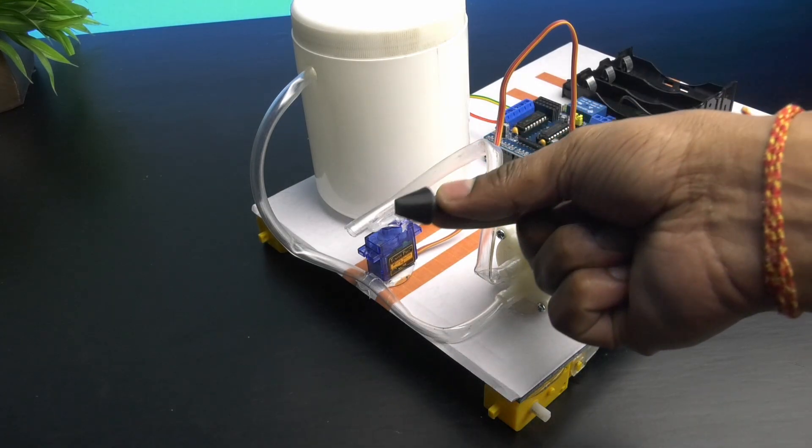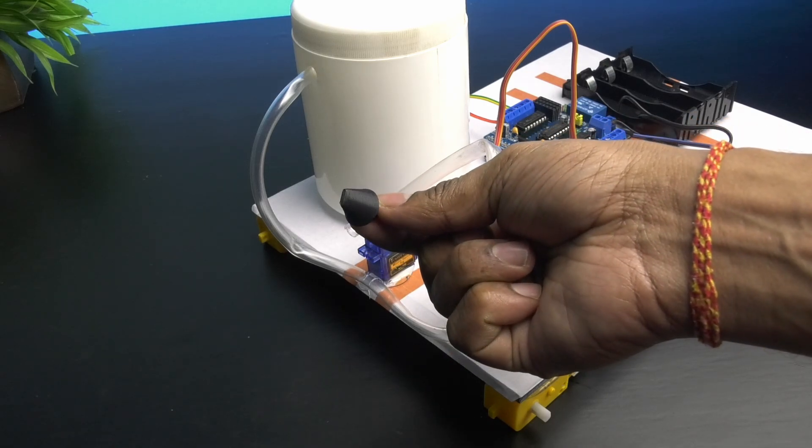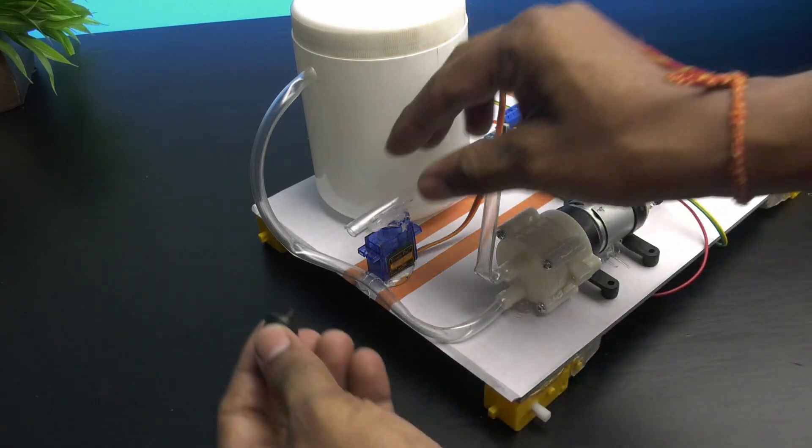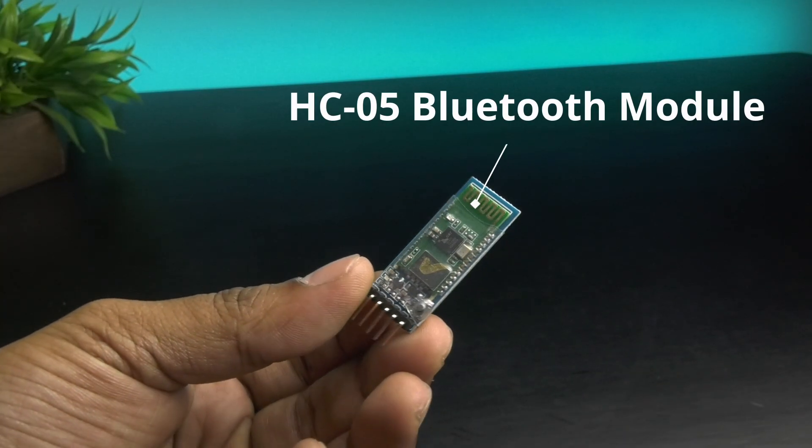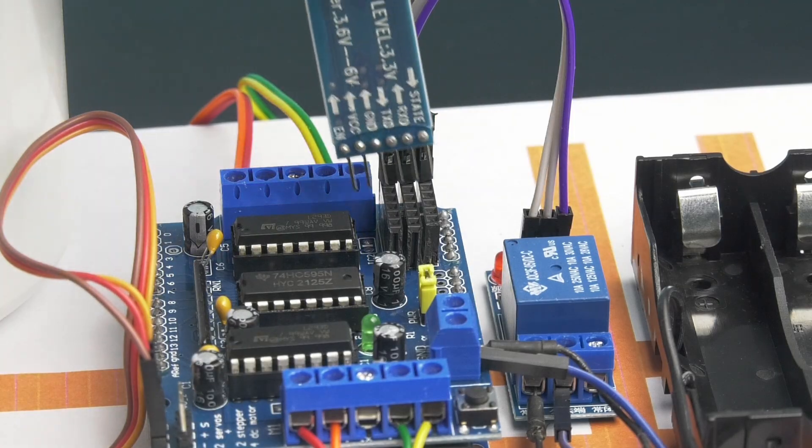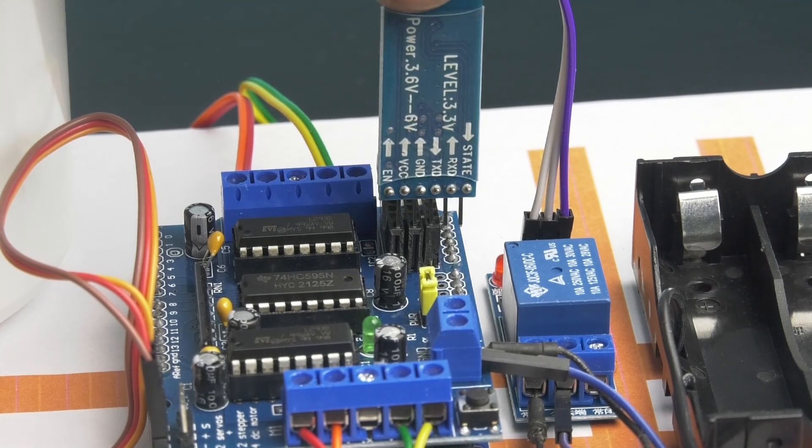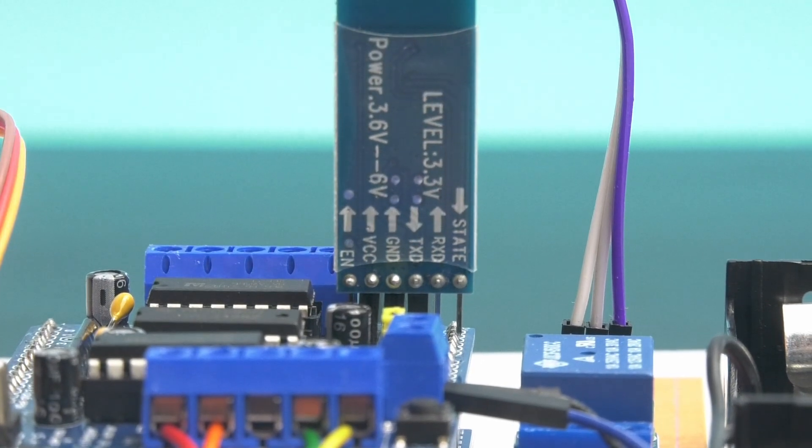Next, I have 3D printed a nozzle and attached in the water pipe. After that, take the bluetooth module and connect it in A0 pin header as shown. All the connections are completed.